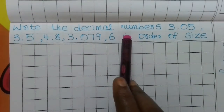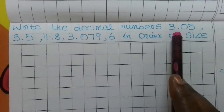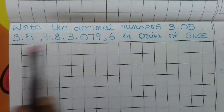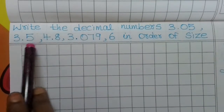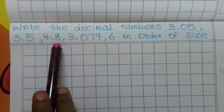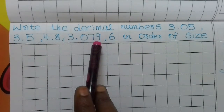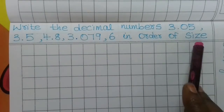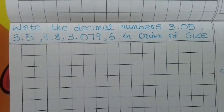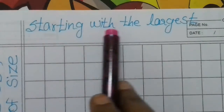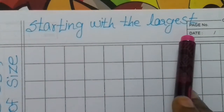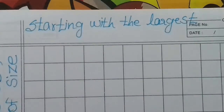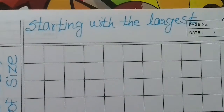Write the decimal numbers 3.05, 3.5, 4.8, 3.079, and 6 in order of size, starting with the largest. So we are ordering or arranging from largest to smallest.